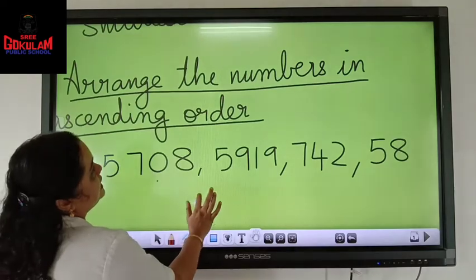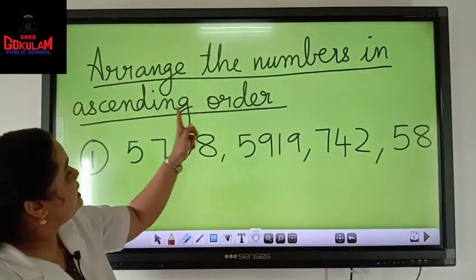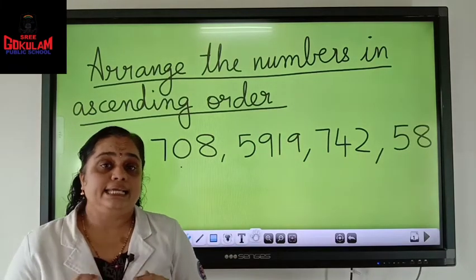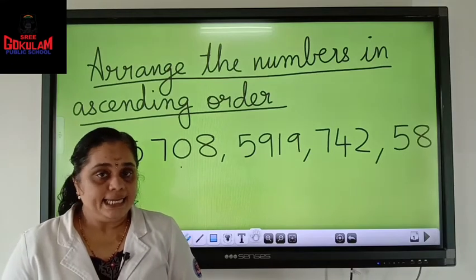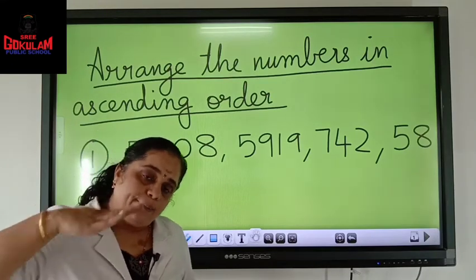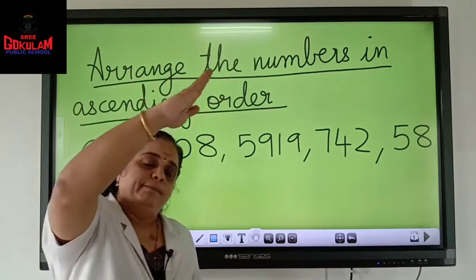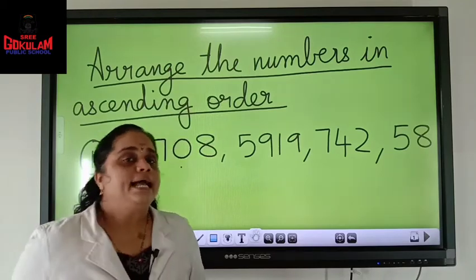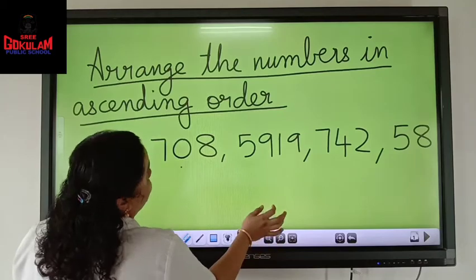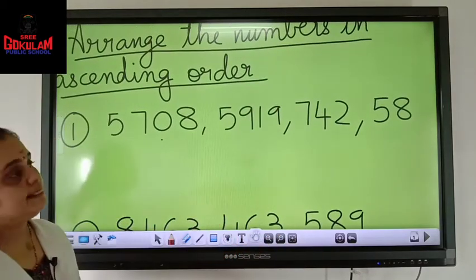Okay children, now arrange the numbers in ascending order. What is ascending order? Ascending means increasing, isn't it? You can imagine ascending — like an aeroplane ascending from small to big. From small to big, increasing order. We have learned ascending and descending before, but now it is with numbers.